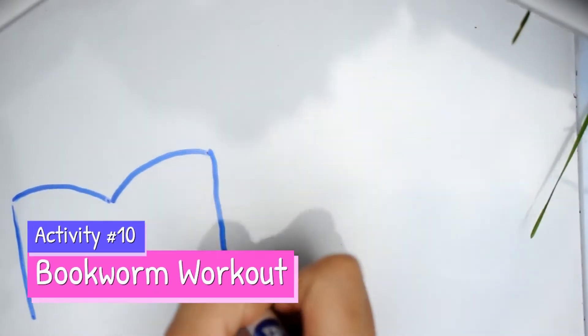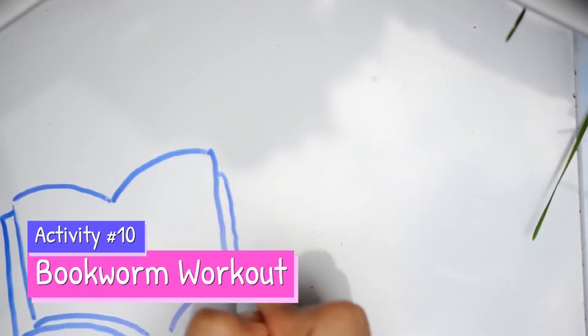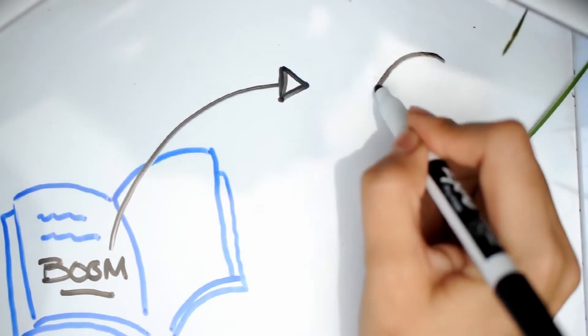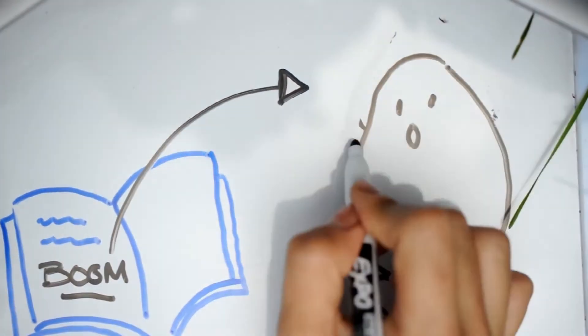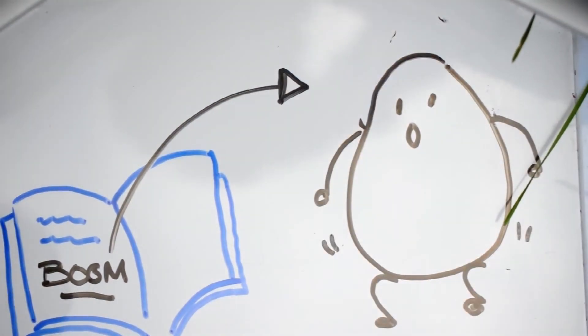Finally, the potato dreamed about a bookworm workout. Find a book you enjoy reading. Before reading, pick a word that shows up a lot in the book. While reading the book, every time you come across that word, do a specific activity, like a jumping jack.